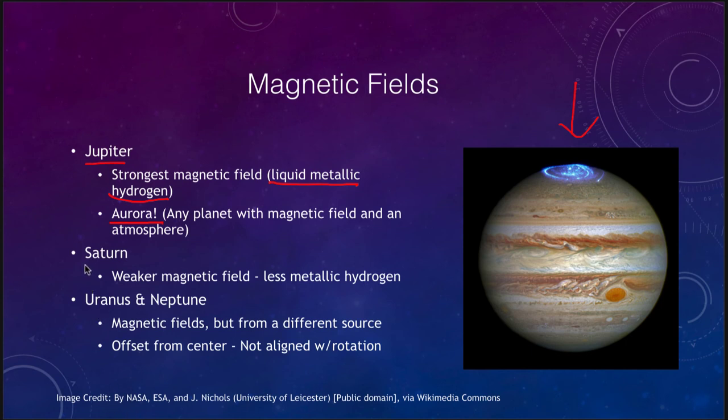Saturn, by comparison, has a weaker magnetic field because it has less liquid metallic hydrogen — less concentration of that metallic hydrogen than Jupiter. So its magnetic field is going to be weaker.